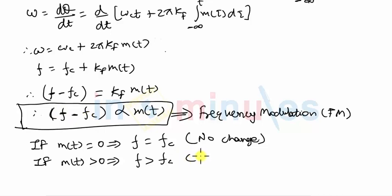This means instantaneous frequency increases above fc. And if I consider the third case in which let's say m is less than 0,